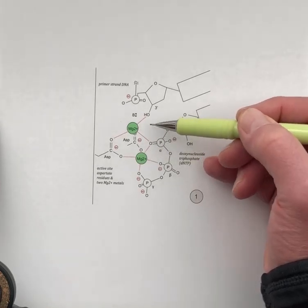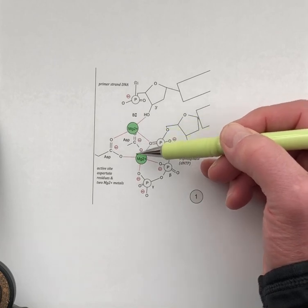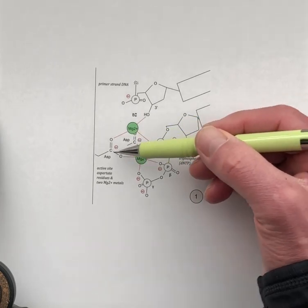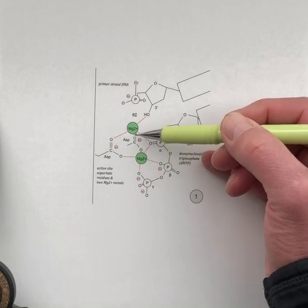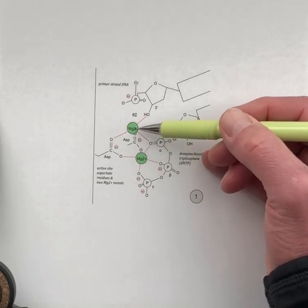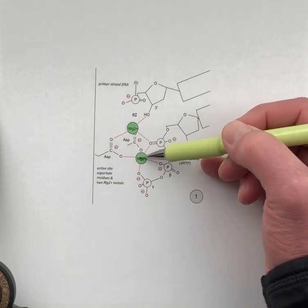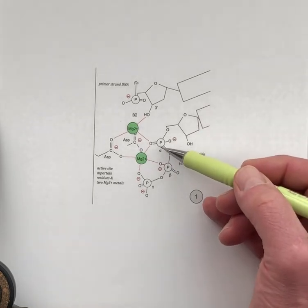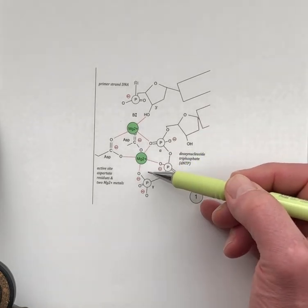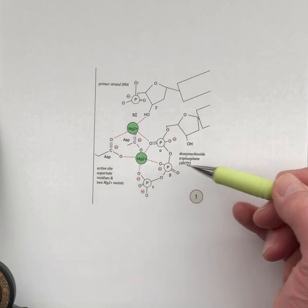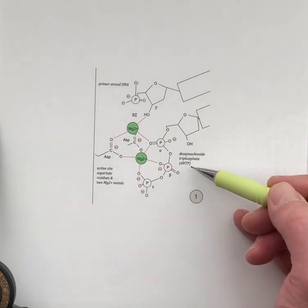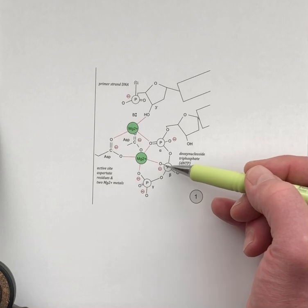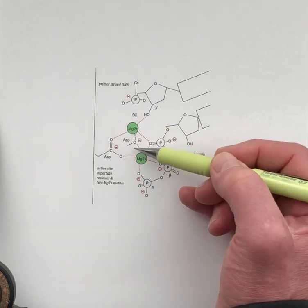The two magnesium ions are held in place by the phosphate groups and the aspartate residues of DNA polymerase — there are always two carboxylate groups that hold these two metal ions in place. One of them is also held in place by the phosphate groups from the incoming DNTP, so the metals arrive with the nucleotide and are also held in place by residues of the DNA polymerase.